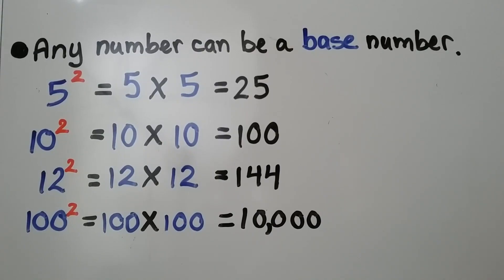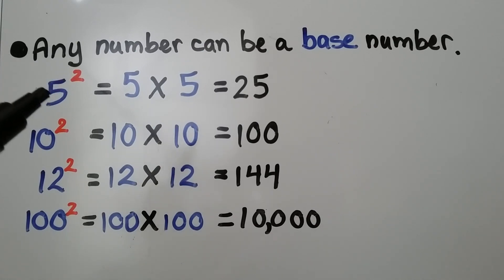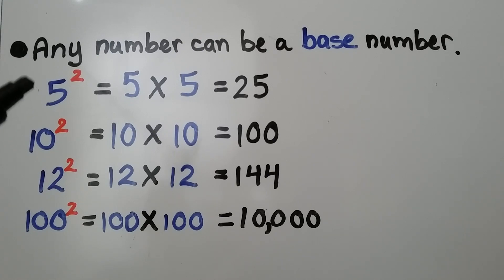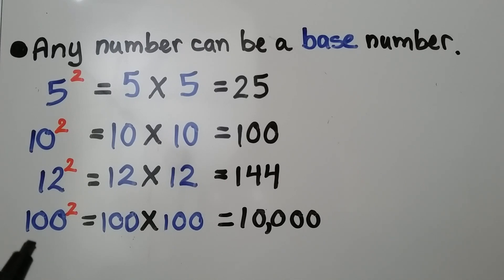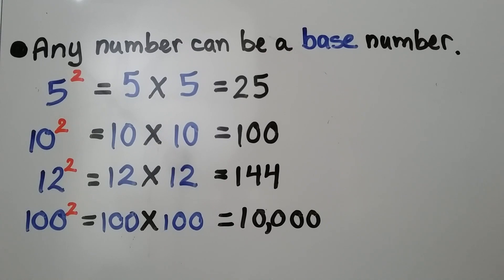Any number can be a base number. If we have 5 to the second power, it's equal to 5 times 5 — we have two factors of 5 — that's equal to 25. 10 to the second power is equal to 10 times 10, that's equal to 100. 12 to the second power is equal to 12 times 12, that's equal to 144. And 100 to the second power is equal to 100 times 100, that's equal to 10,000.